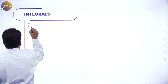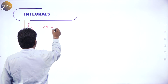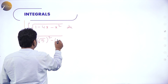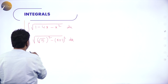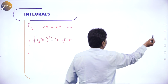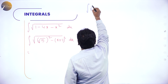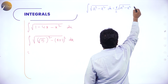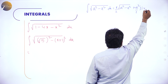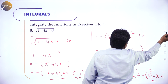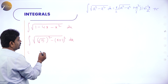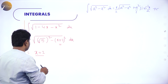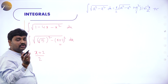So ∫√(1 - 4x - x²) dx = ∫√((√5)² - (x+2)²) dx. Now it is in the form ∫√(a² - x²) dx with a = √5 and x replaced by (x+2). The formula: ∫√(a² - x²) dx = x/2 · √(a² - x²) + a²/2 · sin⁻¹(x/a) + C.